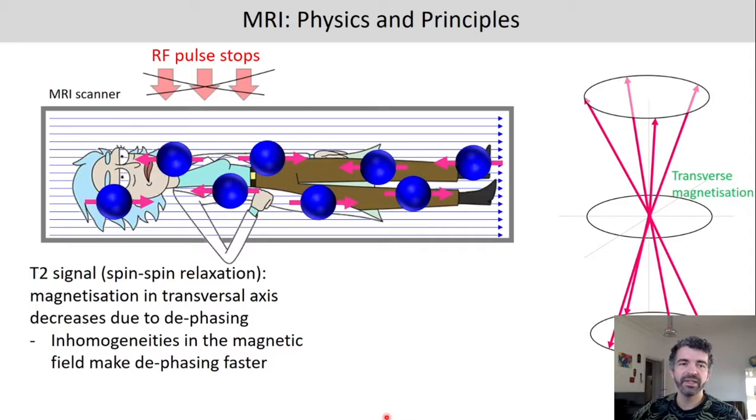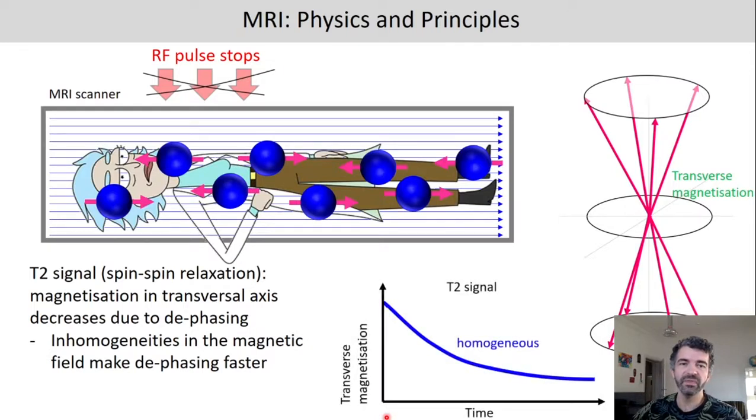And inhomogeneities in the magnetic field can make the de-phasing faster. So here again, this is a function of how the signal changes across time. And you can see for homogeneous materials, it looks like this. And for heterogeneous materials, it looks like this, a bit faster.